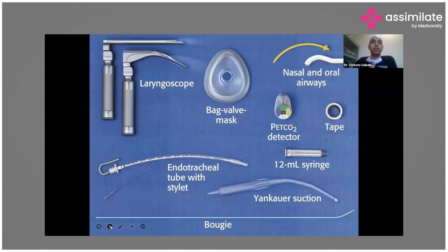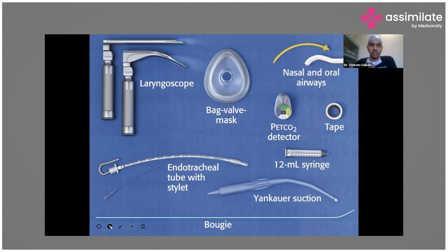Before giving general anesthesia, you should be equipped with certain equipment. These are the bare minimum equipment required to intubate a patient for general anesthesia: laryngoscopes, bag mask valve, nasal and oral airways, tape, syringe, endotracheal tube, and suction cannula. All these things should be kept ready before giving general anesthesia.